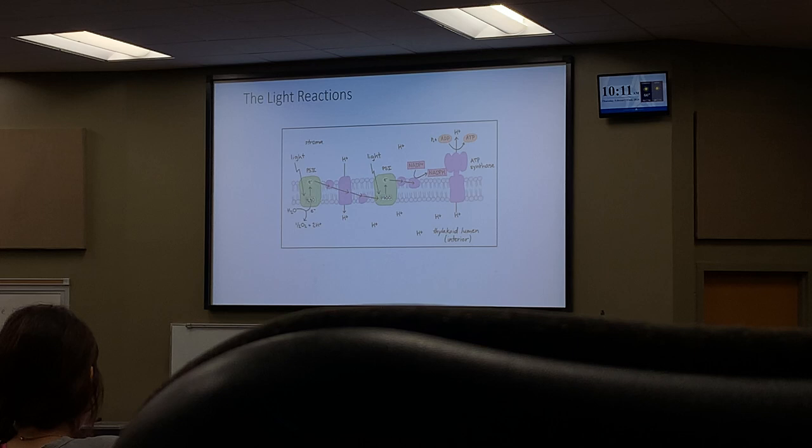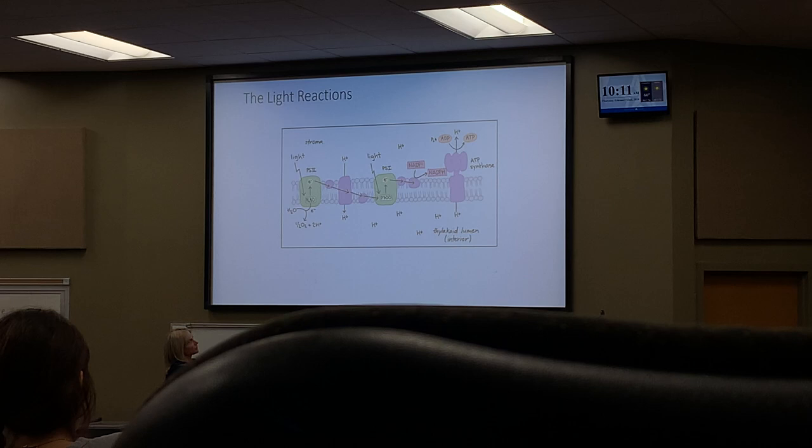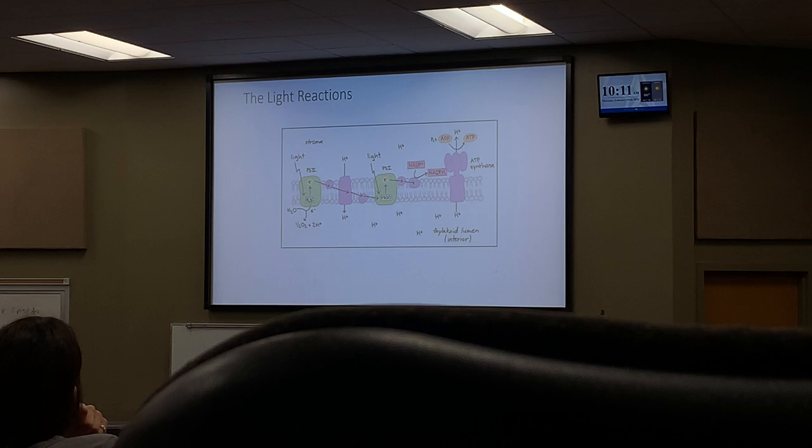Let's identify which electron transport chain does what. ETC number one is between photosystem 2 and photosystem 1, and ETC number two goes from photosystem 1 to NADPH. Which one is important for creating ATP? Talk to your partner — which one creates ATP?